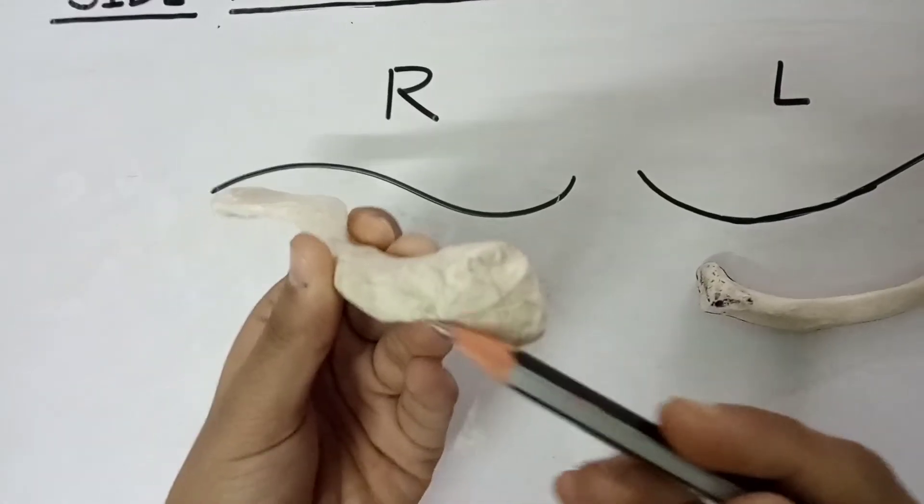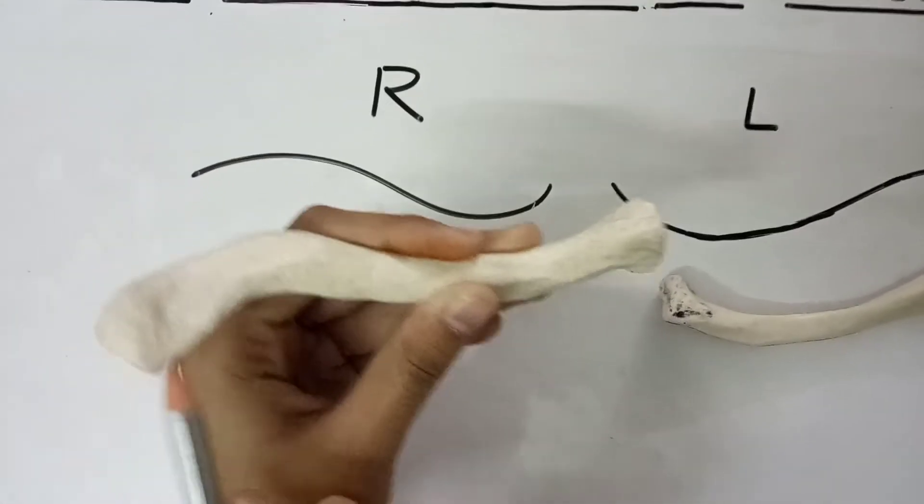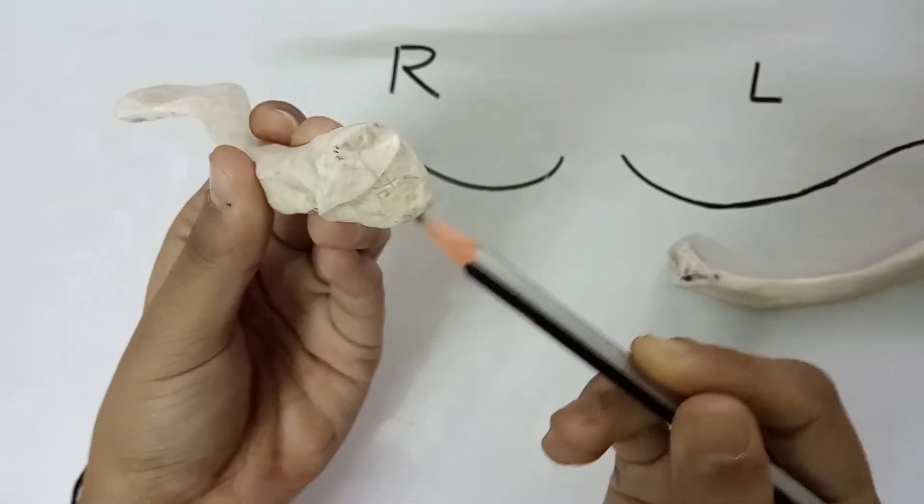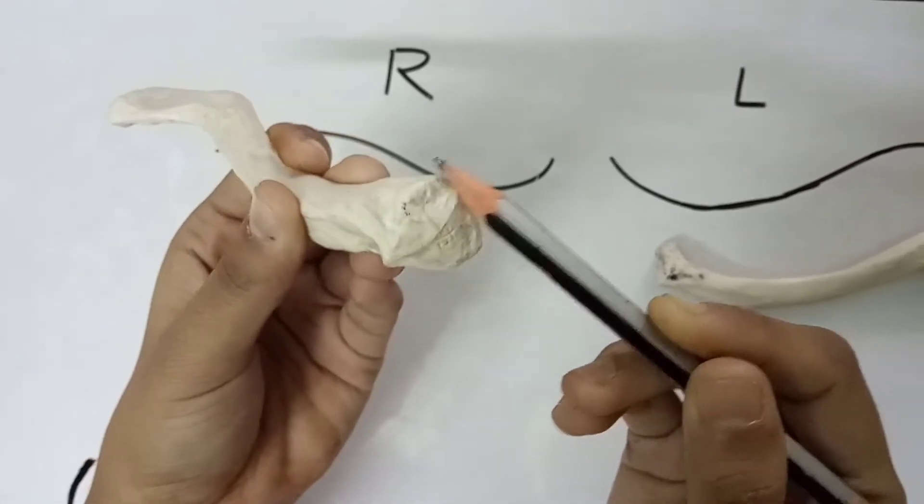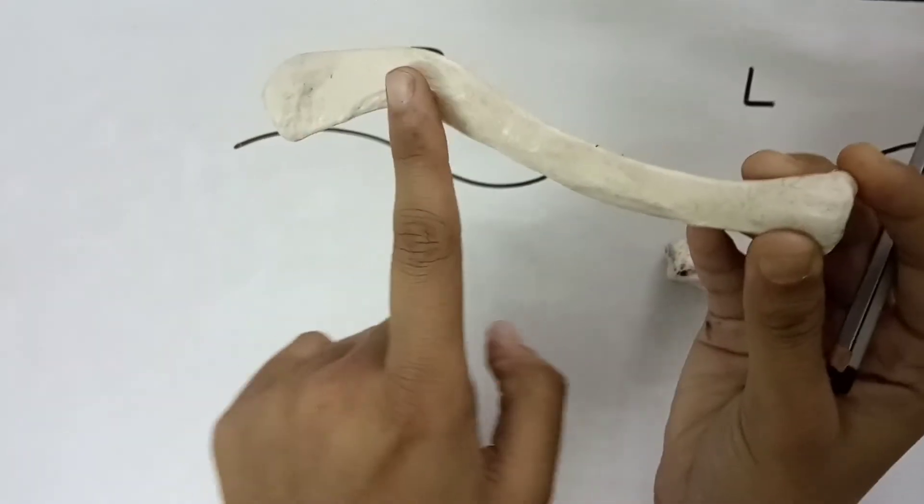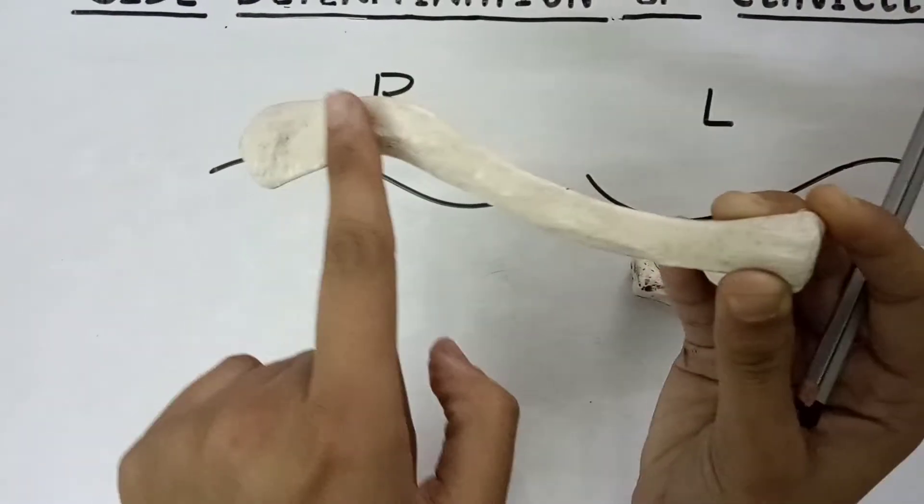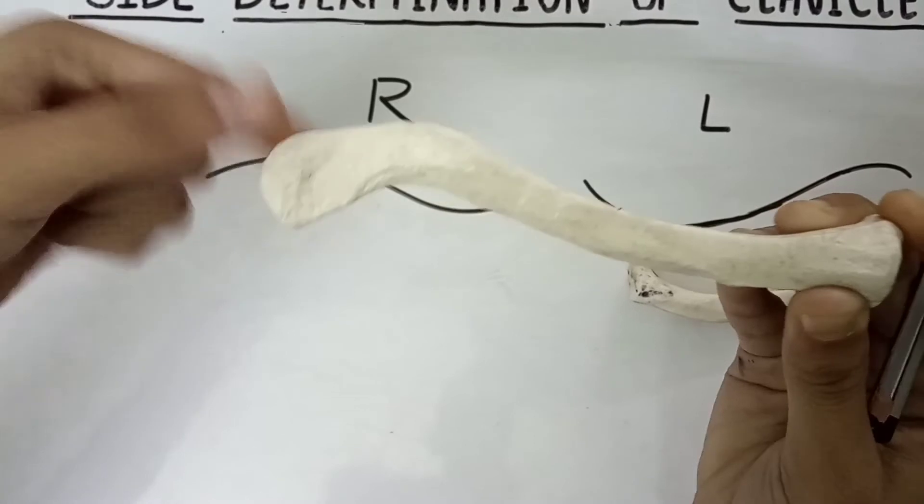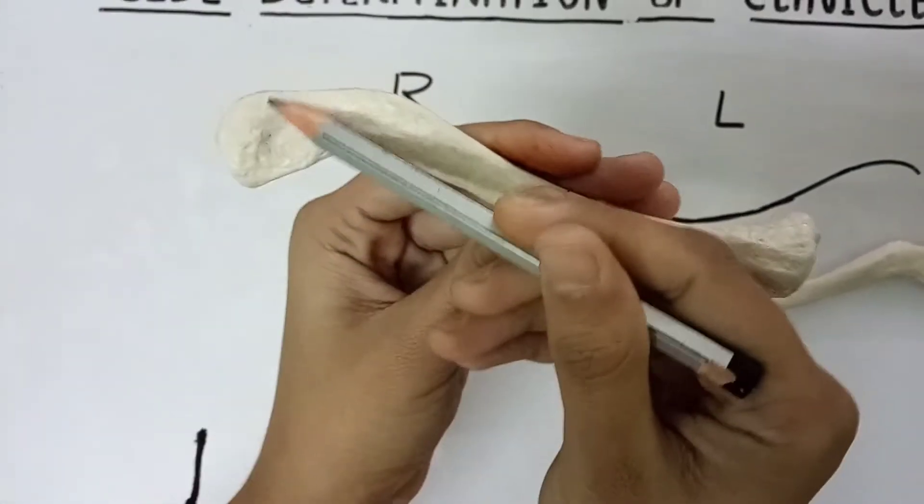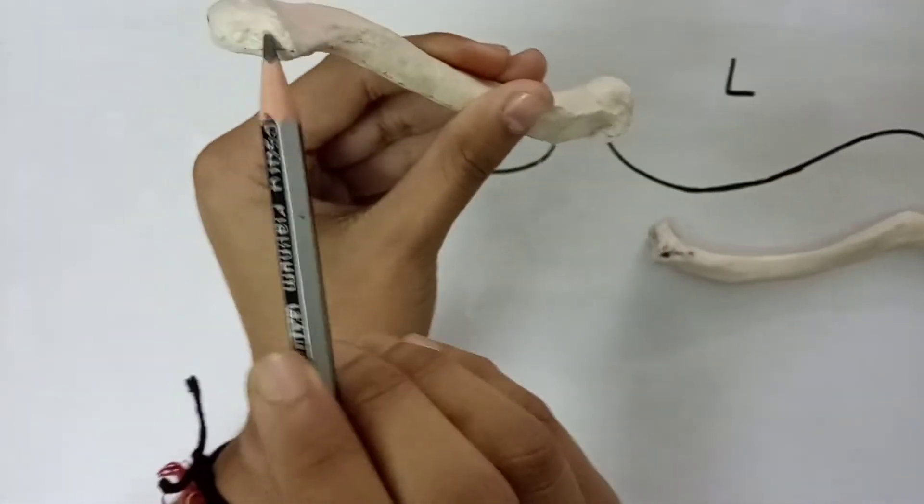This is the medial end which is quadrangular in structure, and this is the lateral end. As you can see, it is flattened from above downward. You can see this structure and this structure.